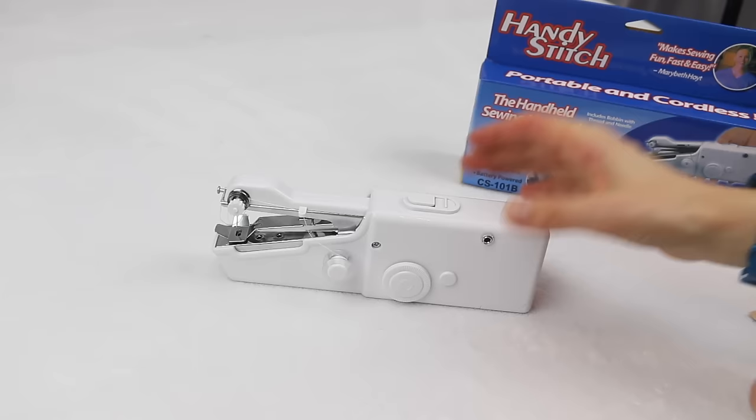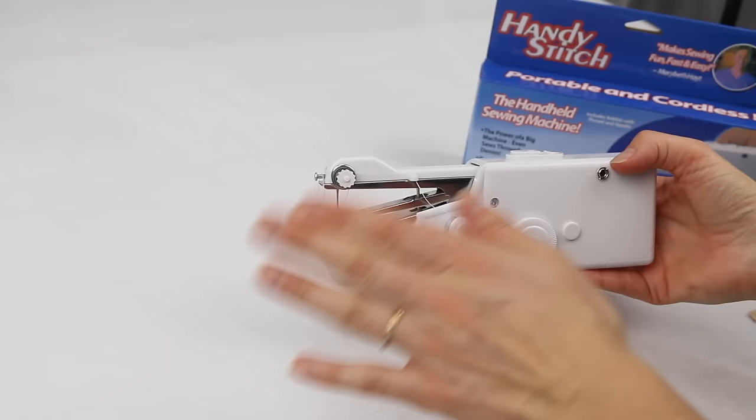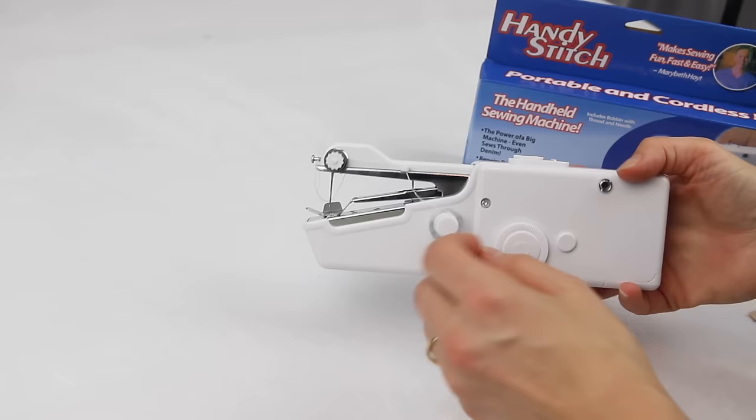Okay, so usually when you get your Handy Stitch out of the box it will already be threaded up and have fabric in it. I've already taken the fabric out and I'm going to unthread it so I can show you step-by-step how to thread the machine up. I'm going to remove this bobbin of thread.